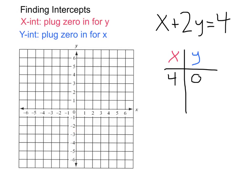So all we need to do to find the y-intercept is plug in zero for x. Plugging that zero in for x, we'll get zero plus two y equals four. We can solve to get a y-value of two.